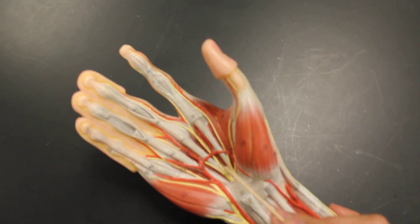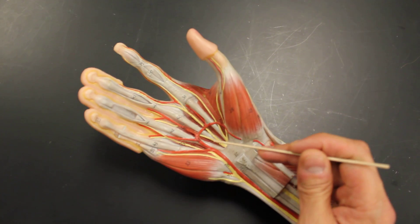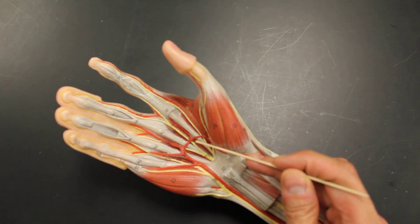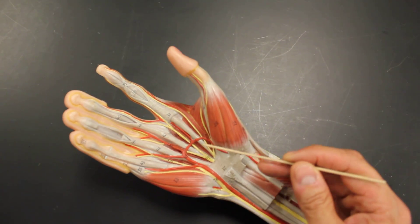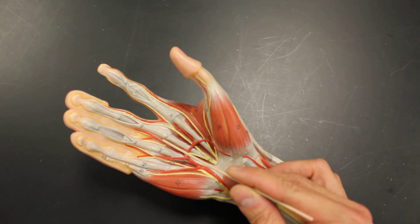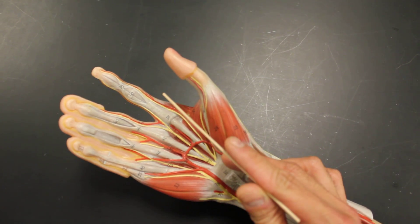And then from there, it goes into the deep and superficial palmar arch. But we only see the superficial because the model doesn't allow us to dig underneath here to see this. After that, it's the common digital, and then it splits into the proper digital ending in the fingers.